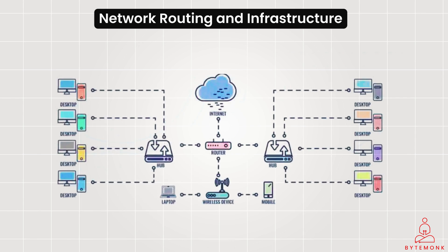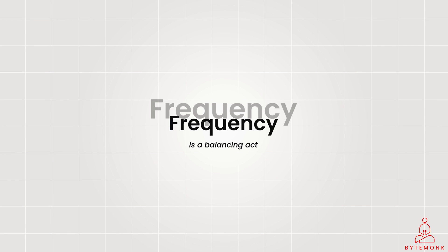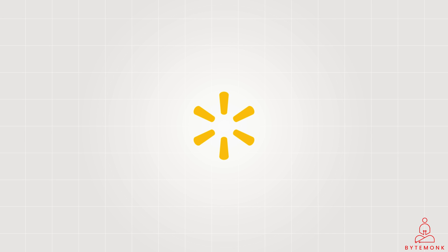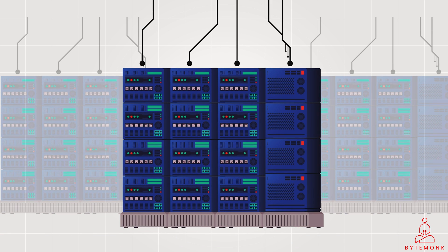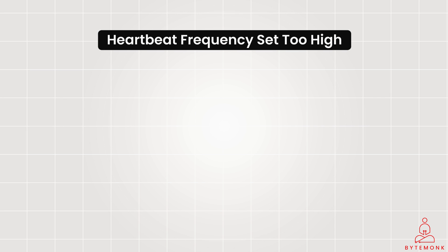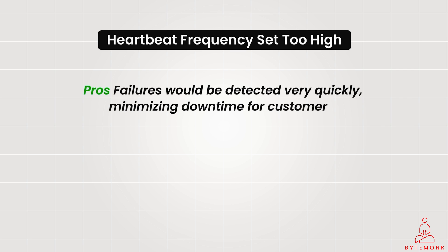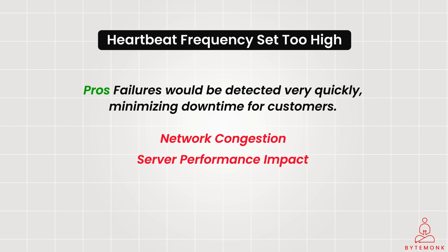The frequency of heartbeat messages is a balancing act. Too frequent and you increase network overhead; too infrequent and failures might not be detected quickly enough. Also, timeout values must be carefully tuned — too short and you risk false positives due to temporary delays; too long and actual failures won't be handled swiftly. For example, if a heartbeat frequency is set to every second across hundreds of servers, failures are detected very quickly, but every server sends and receives heartbeat messages constantly, significantly increasing network traffic, potentially causing congestion, and consuming precious CPU resources.